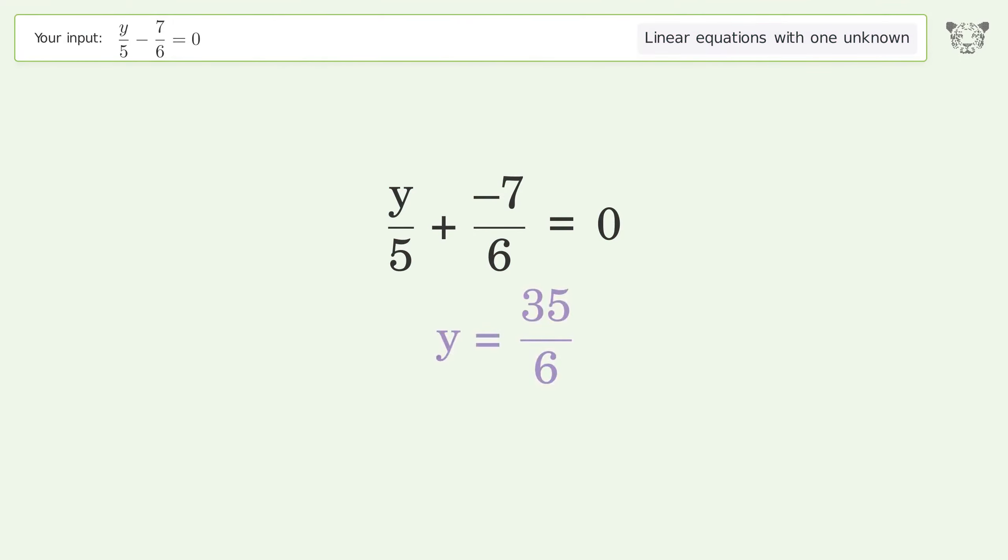You asked Tiger to solve this. This deals with linear equations with one unknown. The final result is y equals 35 over 6.